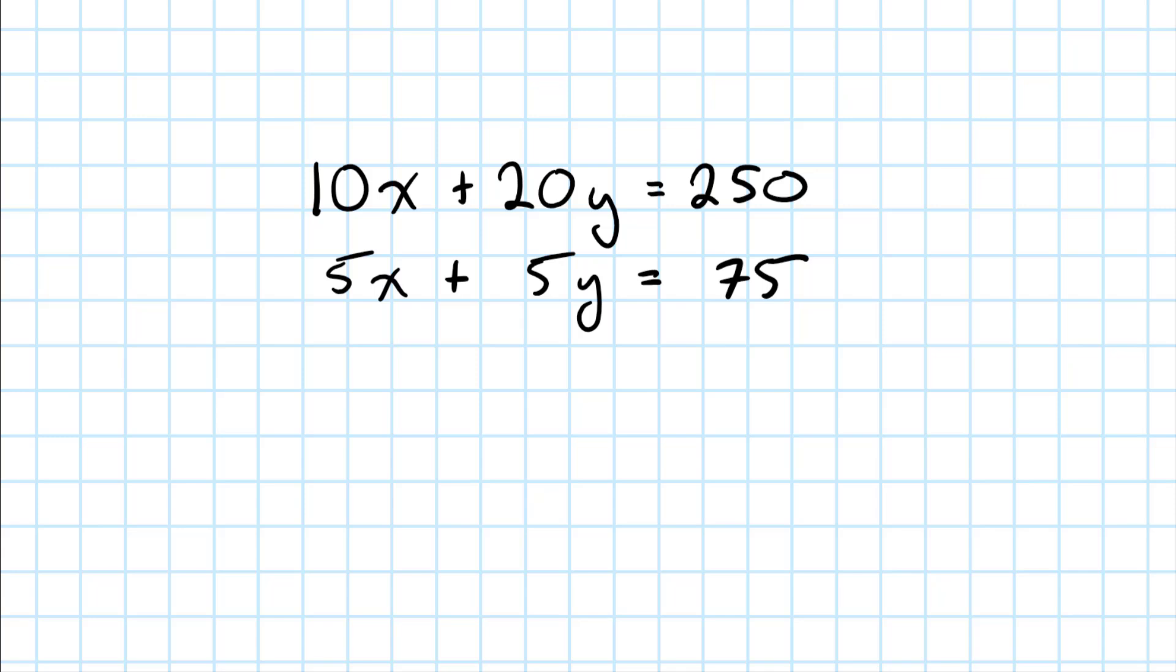I need to set the coefficient of one of the variables, for example, the 5X, equal to the coefficient of the X above it, 10X. So I will multiply both sides of the equation by the same number to turn that 5 into a 10. And I can do that by multiplying by 2. So 2 times that side of the equation. And to keep things equal, I've got to multiply the right side of the equation by 2 as well. So if I do that, I'll have 10X plus 10Y is equal to 150.